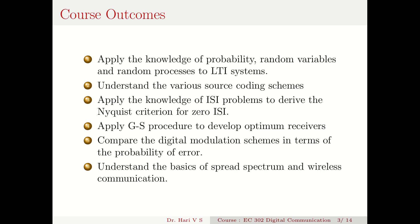Besides what is given in the syllabus, we have written some additional course outcomes for this paper. First is an apply-level outcome — the third level of understanding — that is, apply knowledge of probability, random variables and random processes to LTI systems. This happens in the first module. In the second module you will understand the various source coding schemes. In the third module you will apply the knowledge of ISI problems to derive the Nyquist criterion for zero ISI.